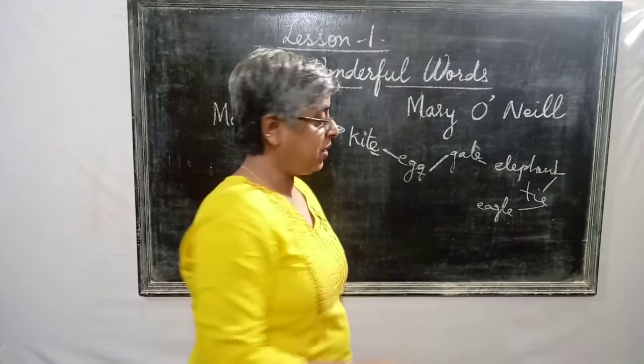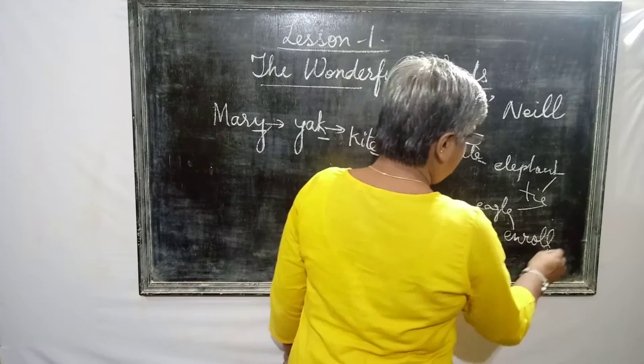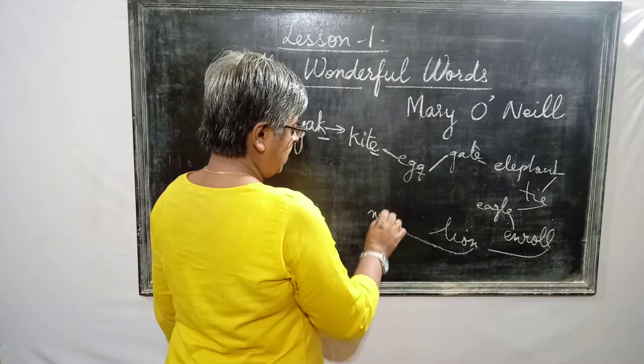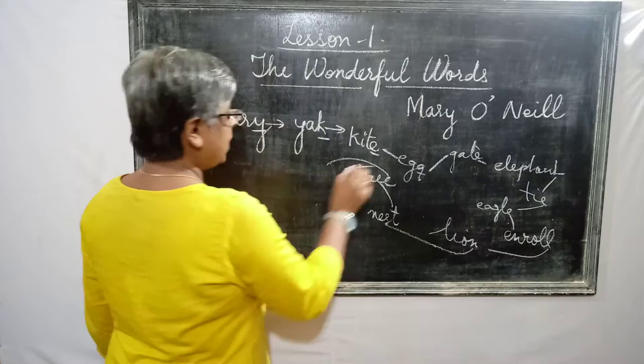Continuing: L — 'Lion,' N — 'Nest,' T — 'Tree,' E — again we have got E. The chain keeps going on.